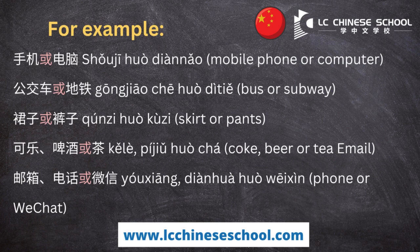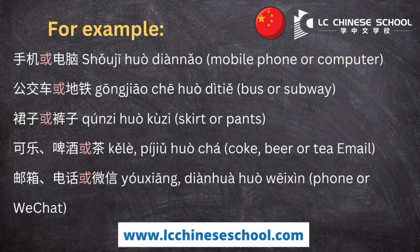Or we can use 或 (huò), meaning 'or'. For example, 手机或电脑 (mobile phone or computer), 公交车或地铁 (bus or subway), 裙子或裤子 (skirt or pants).